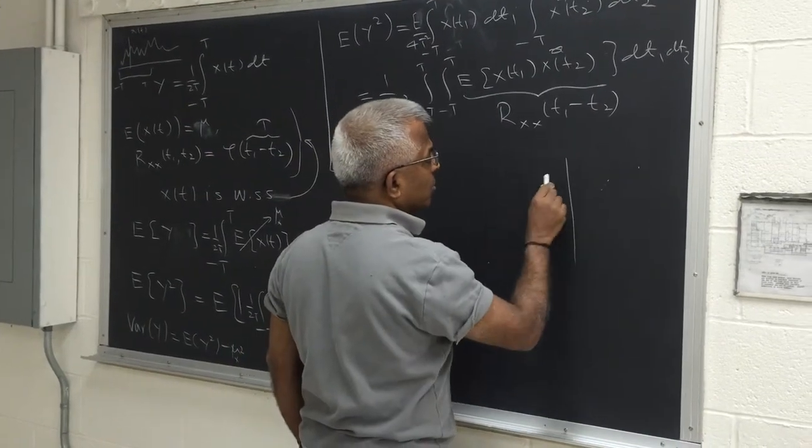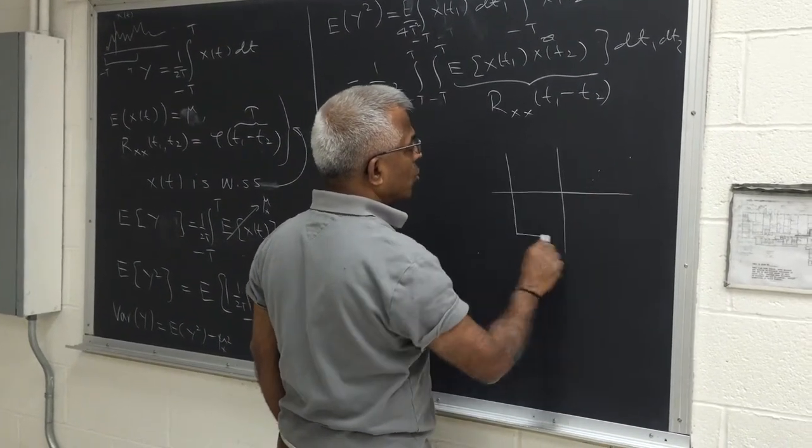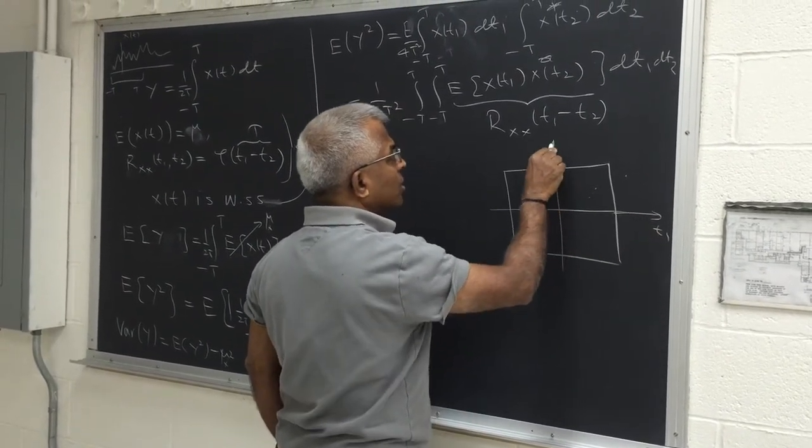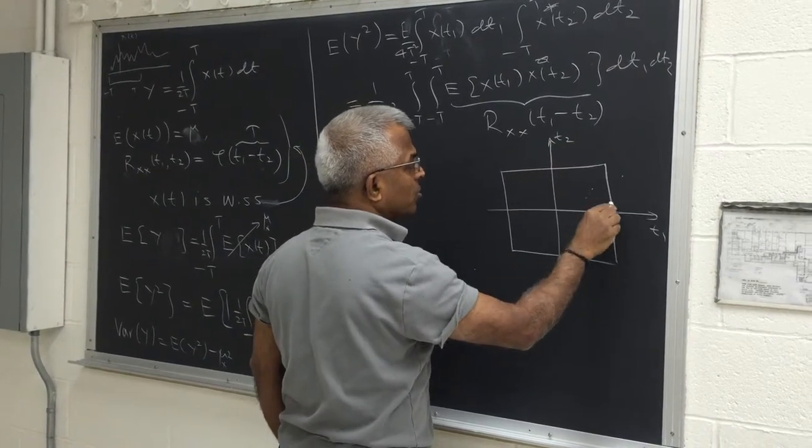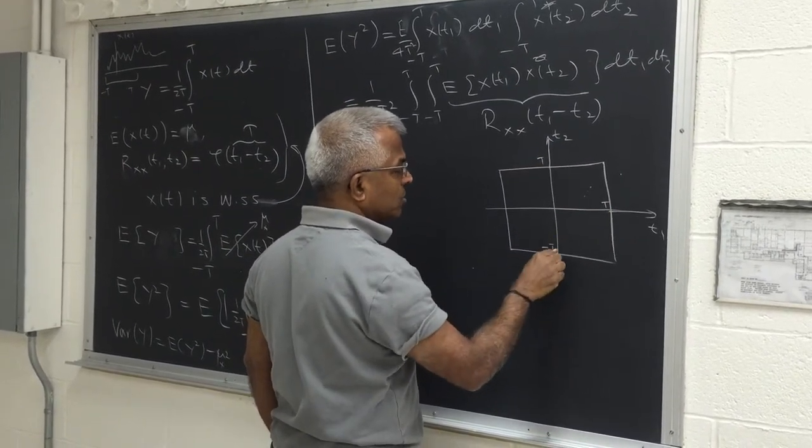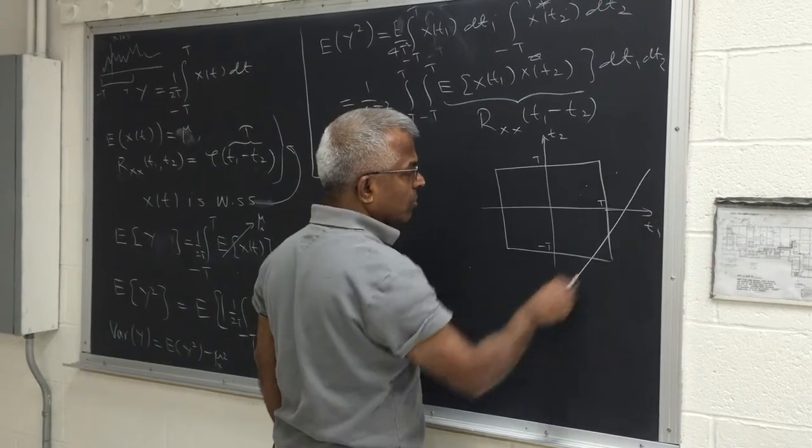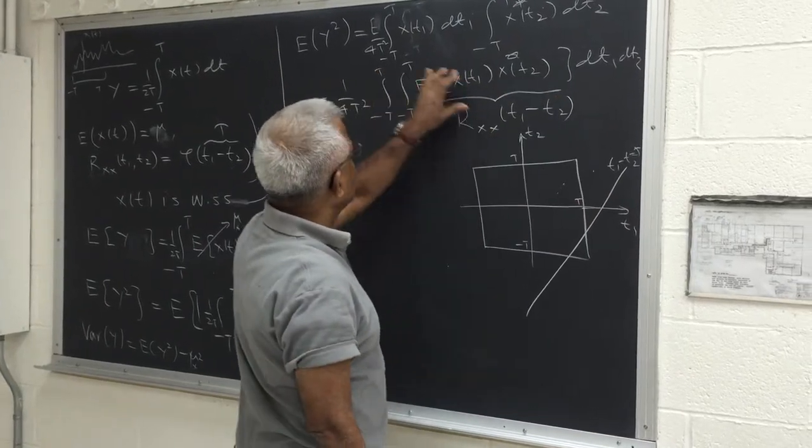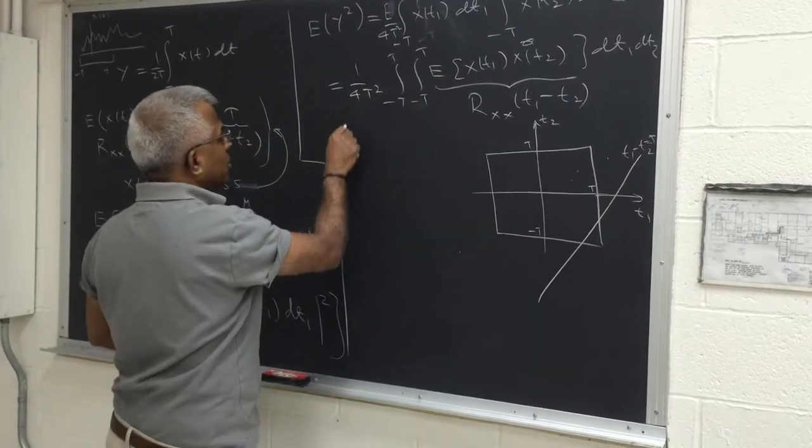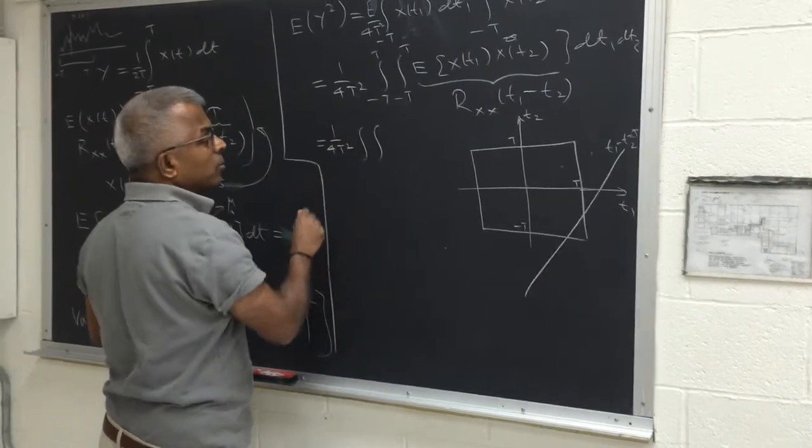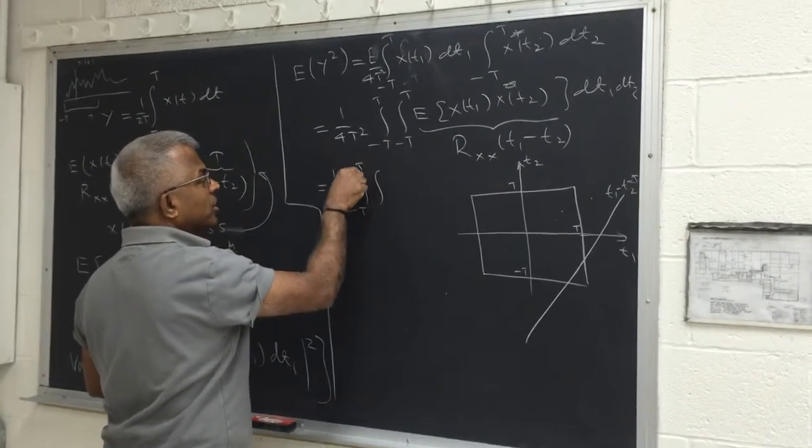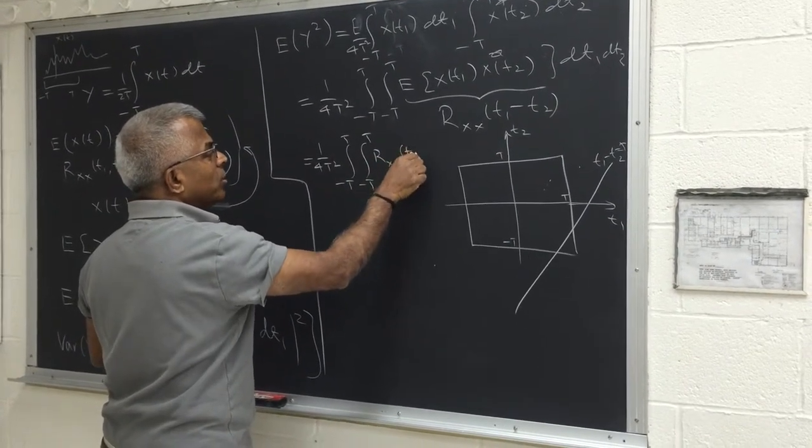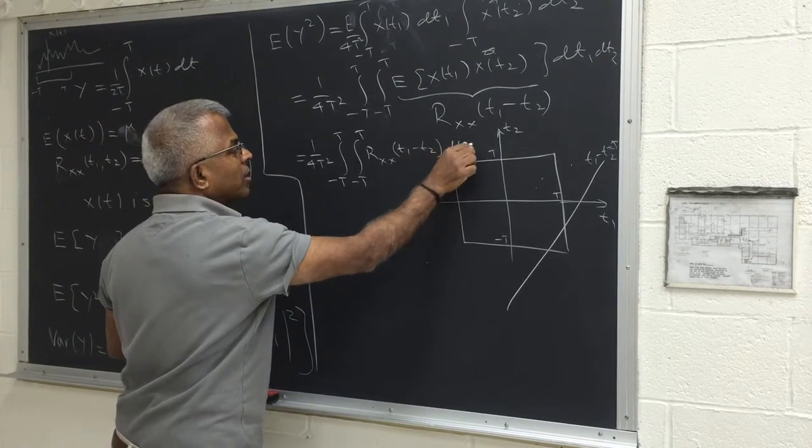So essentially we need to integrate over a square of side 2t because this is t1, this is t2. This point is (t, t); this is (minus t, minus t). And we want this line t1 minus t2 equal to τ. So this is where the integration is happening. In other words, this is 1 over 4t squared, double integral from minus t to t, R_XX of t1 minus t2, dt1 dt2.